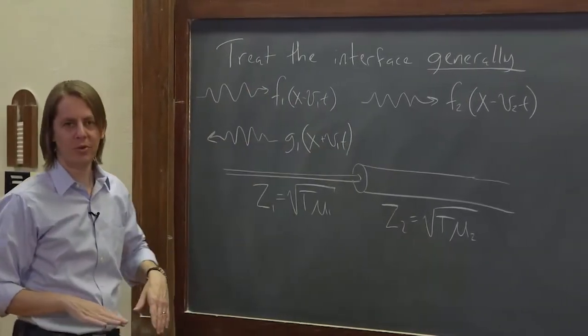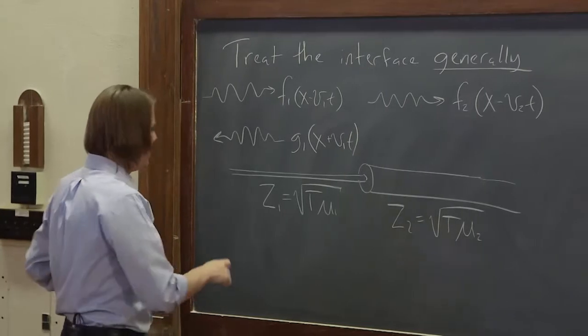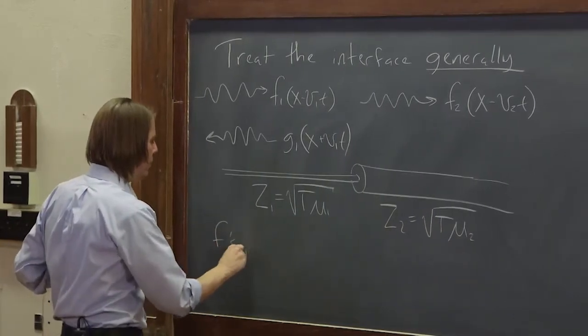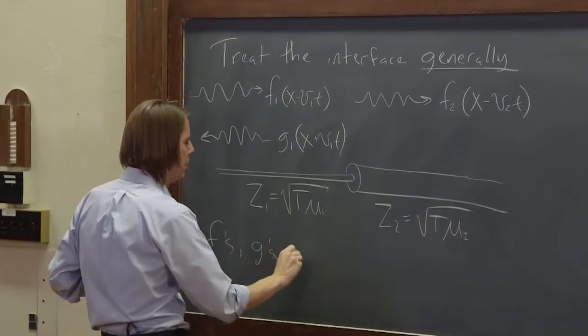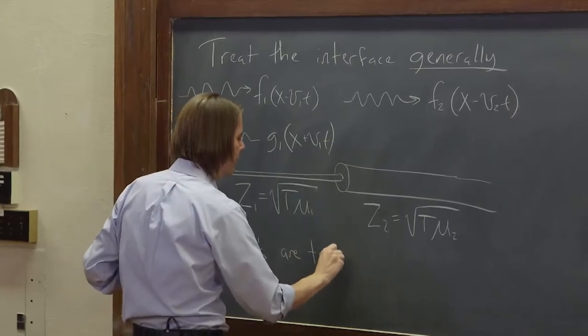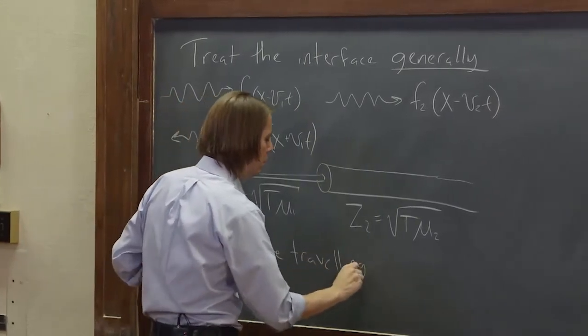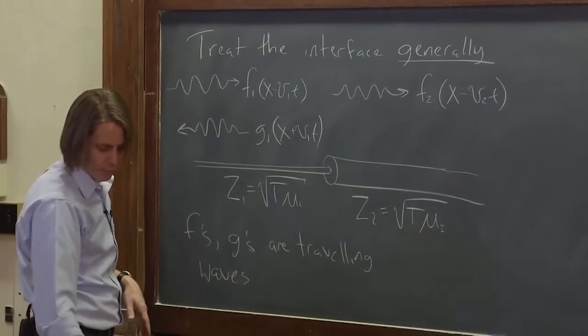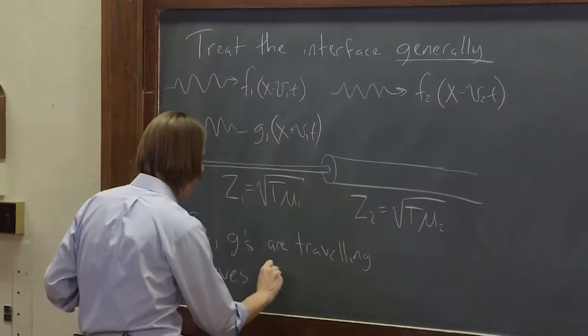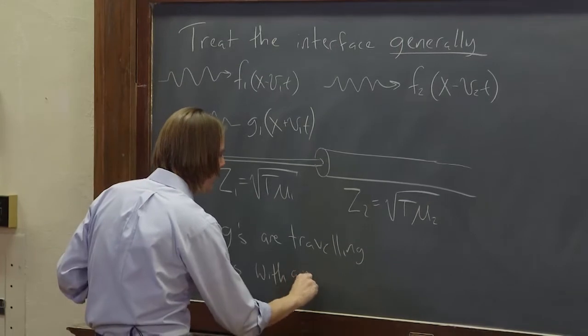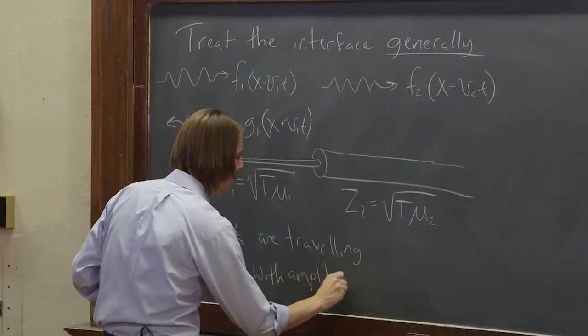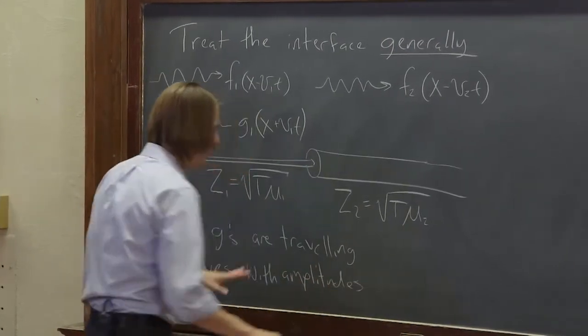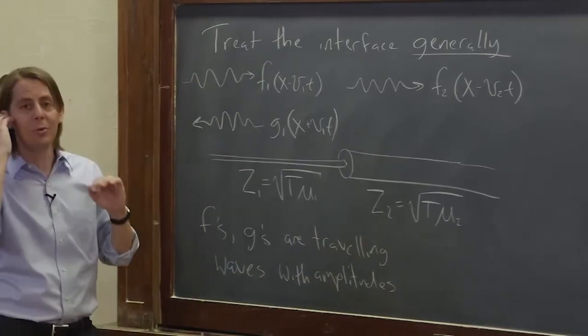And we're not even saying what they are, we're just doing our x and vt's. So f's and g's are traveling waves with amplitudes. So even though we didn't specify what they are, sinusoids or what, we're going to think of them as having amplitudes.